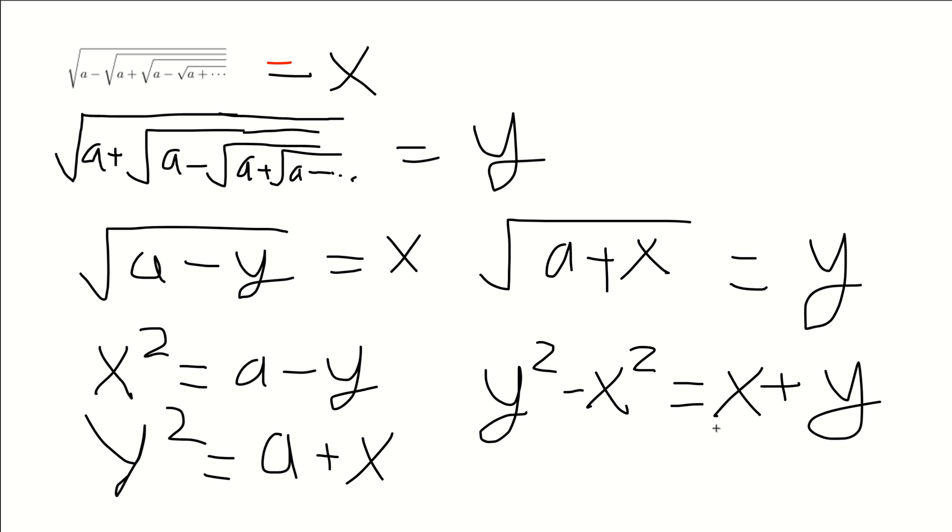This thing is a difference of squares, and we can factor it as y plus x times y minus x is equal to x plus y. And now, clearly both x and y are positive here, so we can divide both sides by x plus y. When we divide both sides, we get y minus x is equal to 1.